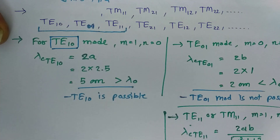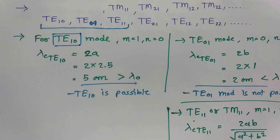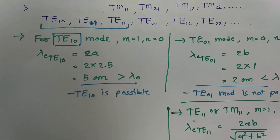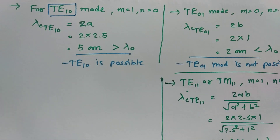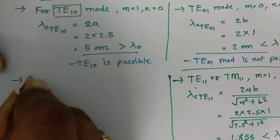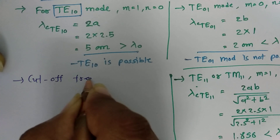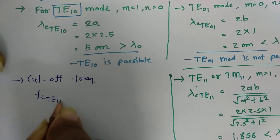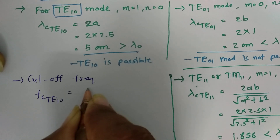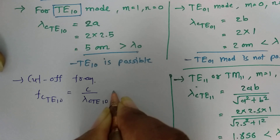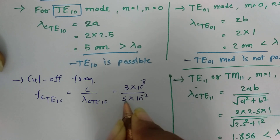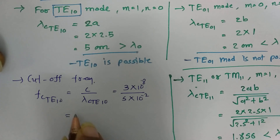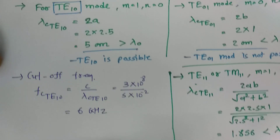Since only TE10 is the possible mode, we now calculate its cutoff frequency and guided wavelength. The cutoff frequency for TE10 is Fc = C / λC(TE10) = 3 × 10⁸ / (5 × 10⁻²) = 6 GHz.